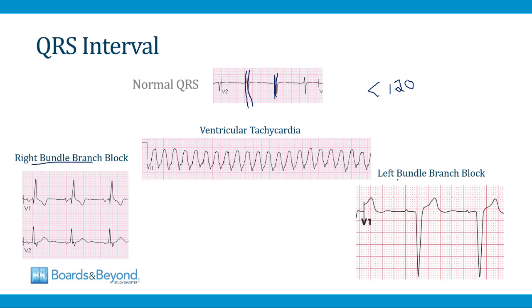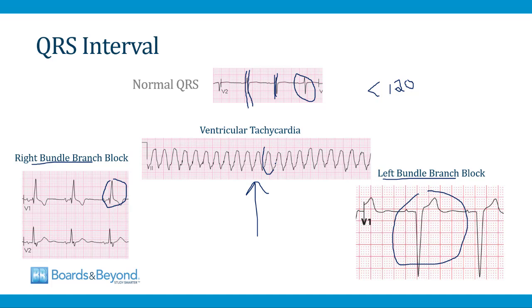Some causes of a wide QRS interval include right bundle branch block, left bundle branch block, and ventricular tachycardia. All of these produce wide QRS complexes compared to a normal narrow one. When assessing an unstable patient with a tachycardia, the first thing you want to do is decide whether the QRS complex is wide or narrow, because that will help determine the cause of the tachycardia and how to treat the patient.